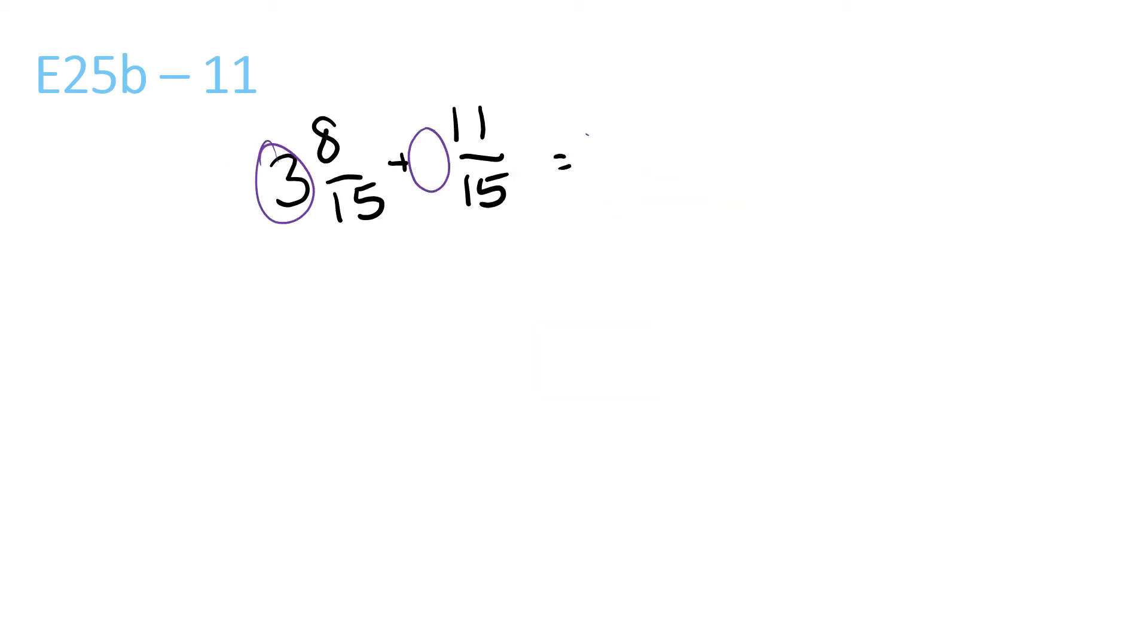3 plus nothing is 3. 8 plus 11 is 19 over 15. 15 goes into 19 once with a remainder of 4 over 15. 1 and 4 over 15 plus 3 equals 4 and 4 over 15. That's your answer.